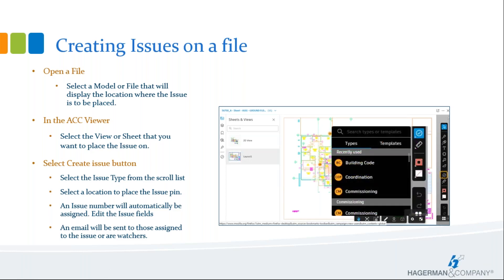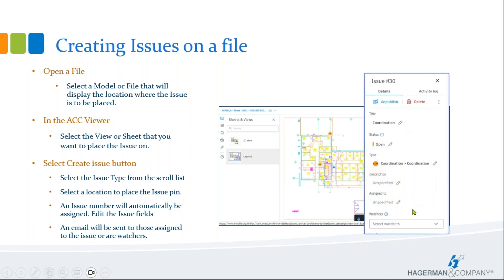Once the Create Issues button is selected, you can choose from the issue type. Most of these are pretty standard, and we'll talk about how you can create additional types. Once you select your issue type, it will prompt you to select a point in the view to place a push pin, noting where that issue will be located. Once the issue type is selected and the push pin placed, you can fill out the details for this issue: the status, description, and title — it picks a title based on the type selected, but you can edit it. You can assign it to someone, add watchers, and fill in as many fields as you feel necessary.